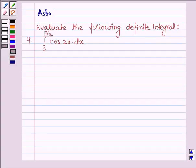Hello and welcome to the session. The given question says, evaluate the following definite integral. Integral cos 2x dx where the lower limit of integration is 0 and upper limit is π/2.